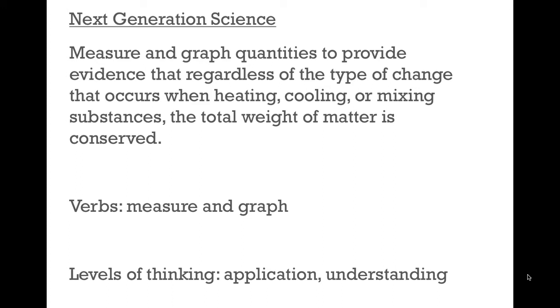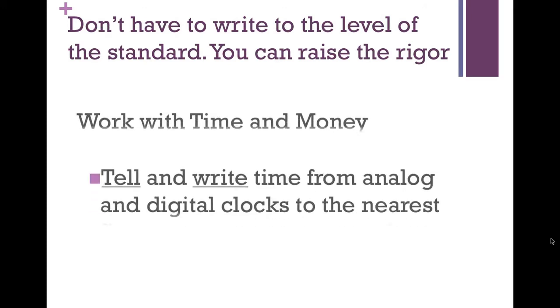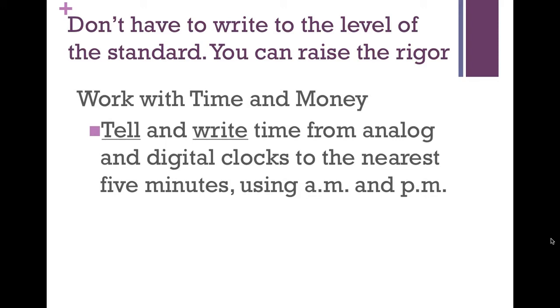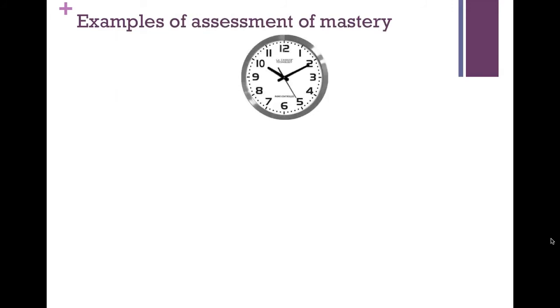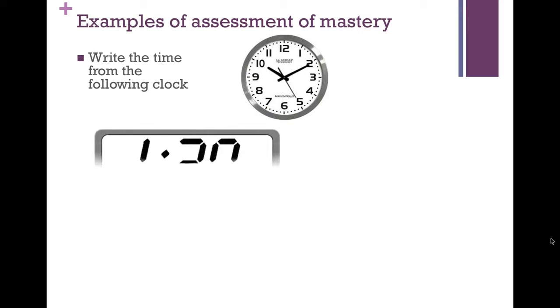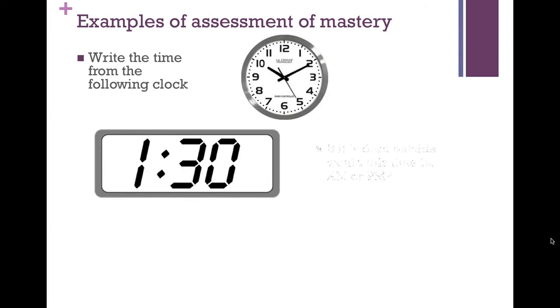At the same time, if you're going to raise the rigor in your classroom and challenge students, you need to push some standards beyond what they're asking. An example: the Common Core Math standard on working with time and money asks you to 'tell and write time from analog and digital clocks to the nearest five minutes using a.m. and p.m.' — that's understanding and applying. A question to determine mastery might show students a clock and ask them to write the time, or give them a digital time and ask whether it's a.m. or p.m. But these, while challenging, aren't necessarily rigorous because there's a single correct answer.